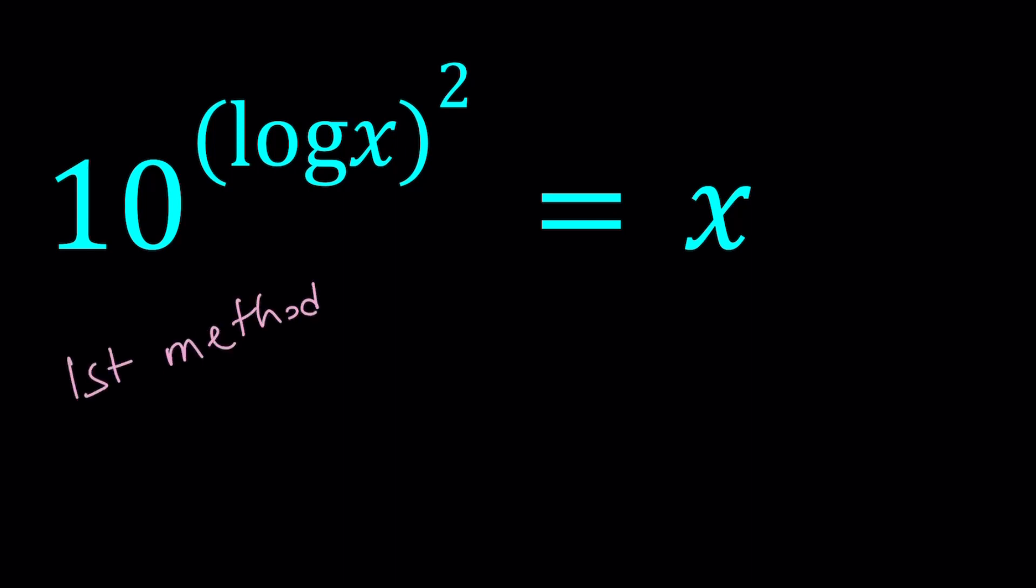My first method is going to use my most favorite, favoritest method, substitution. Log x equals t. t is a good variable, by the way. Here the base is 10. It's not written or hidden. But this means 10 to the power of t equals x. Or x equals 10 to the power of t. That's how logs work. This is the only thing you need to know, pretty much.